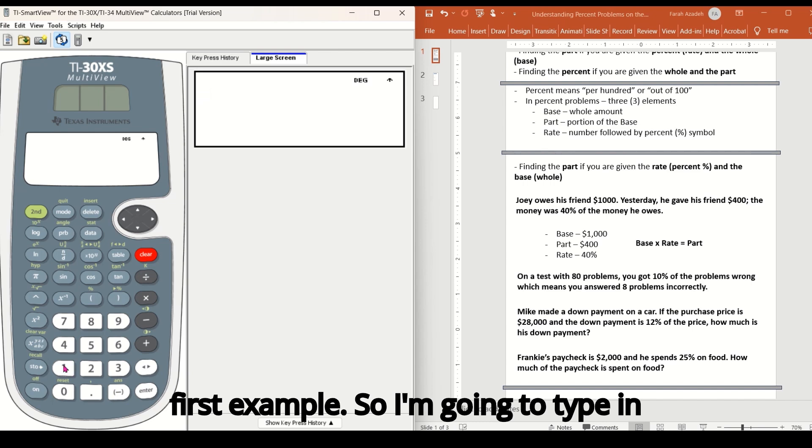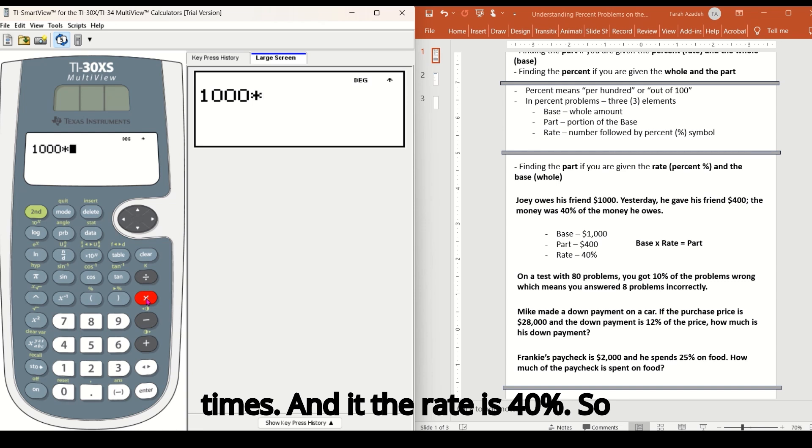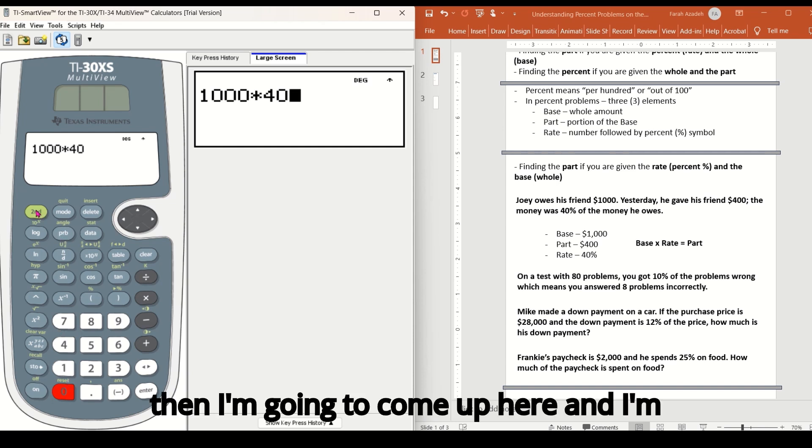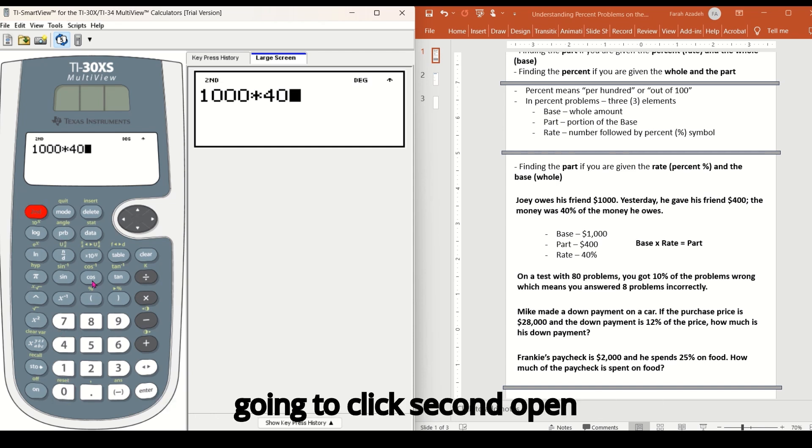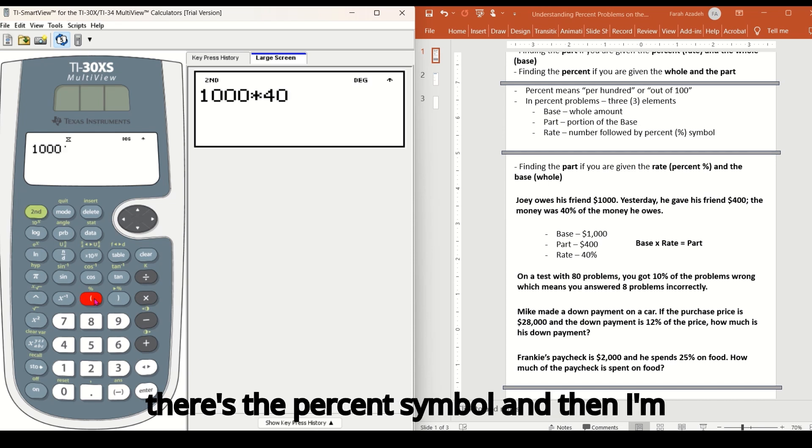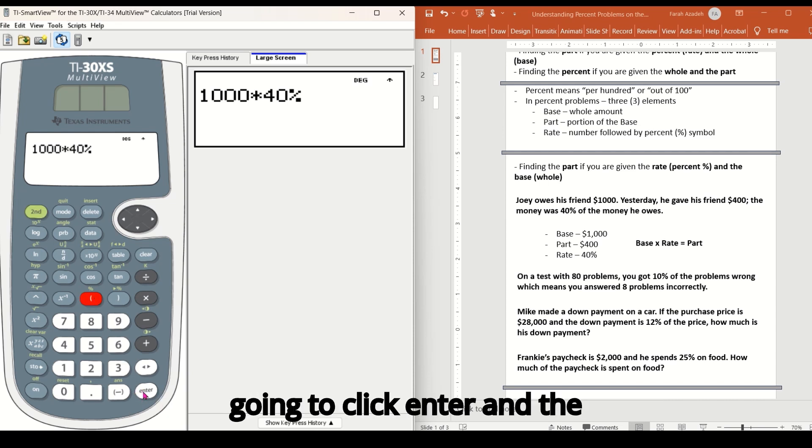So I'm going to type in the base a thousand times. And the rate is 40%. So I'm going to type four zero, and then I'm going to come up here and I'm going to click second, open parentheses, because above it, there's the percent symbol. And then I'm going to click enter.